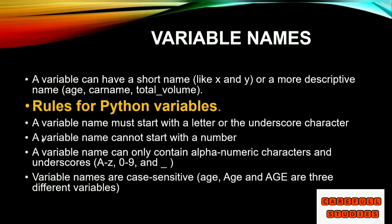There are some rules for Python variables. First, a variable must start with a letter or underscore, but not any other character — it cannot start with a number. A variable name can only contain alphanumeric characters and underscores (A–Z, 0–9, and underscore). Variable names are case-sensitive.